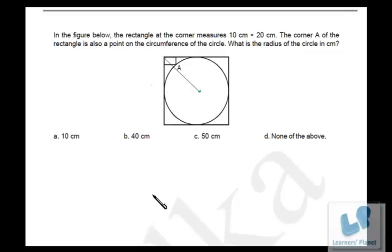Now friends, here we have a classic problem from CAT 2003. In this case we have a rectangle that measures 10 centimeter by 20 centimeter and we have to find out the radius of the circle.